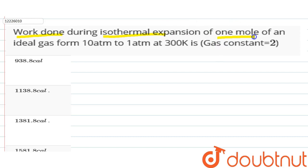We are given one mole of an ideal gas. From 10 atmospheric to 1 atmospheric, change in the pressure. From 10 atmospheric to 1 atmospheric pressure change. We have to give 300 Kelvin temperature.